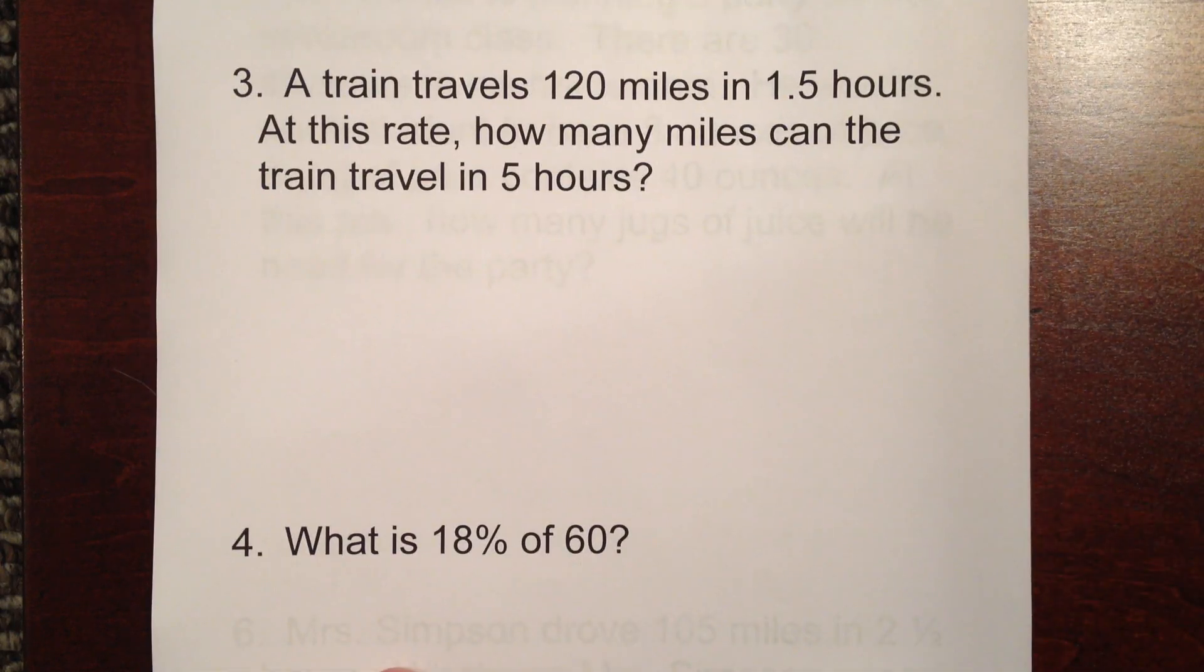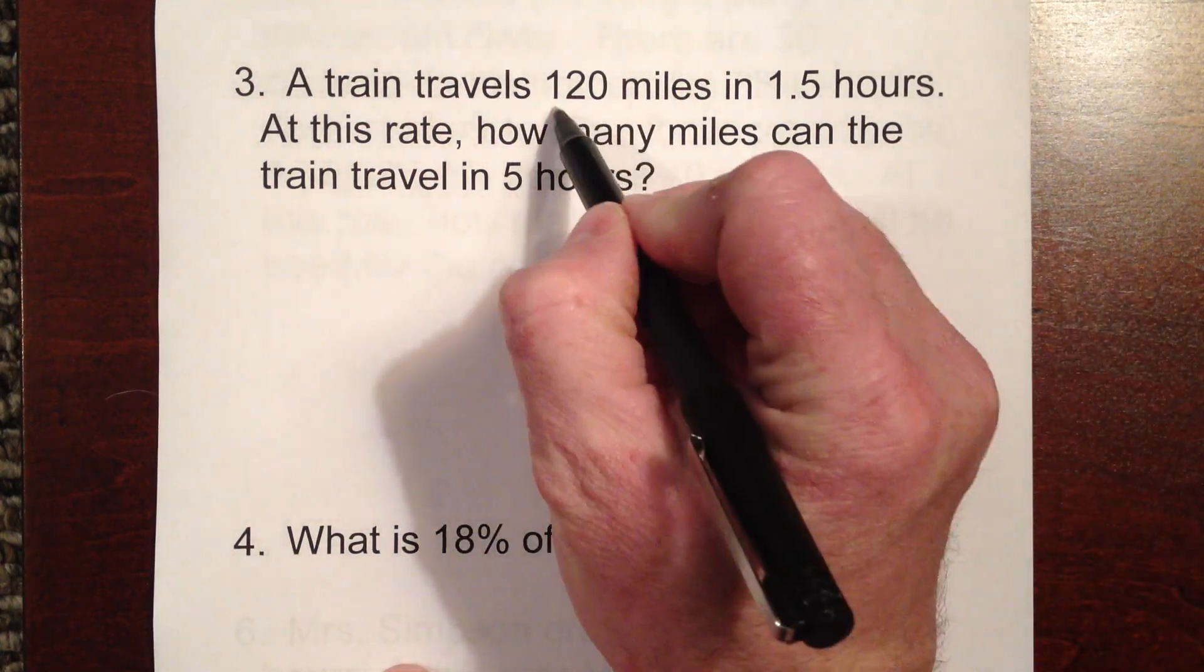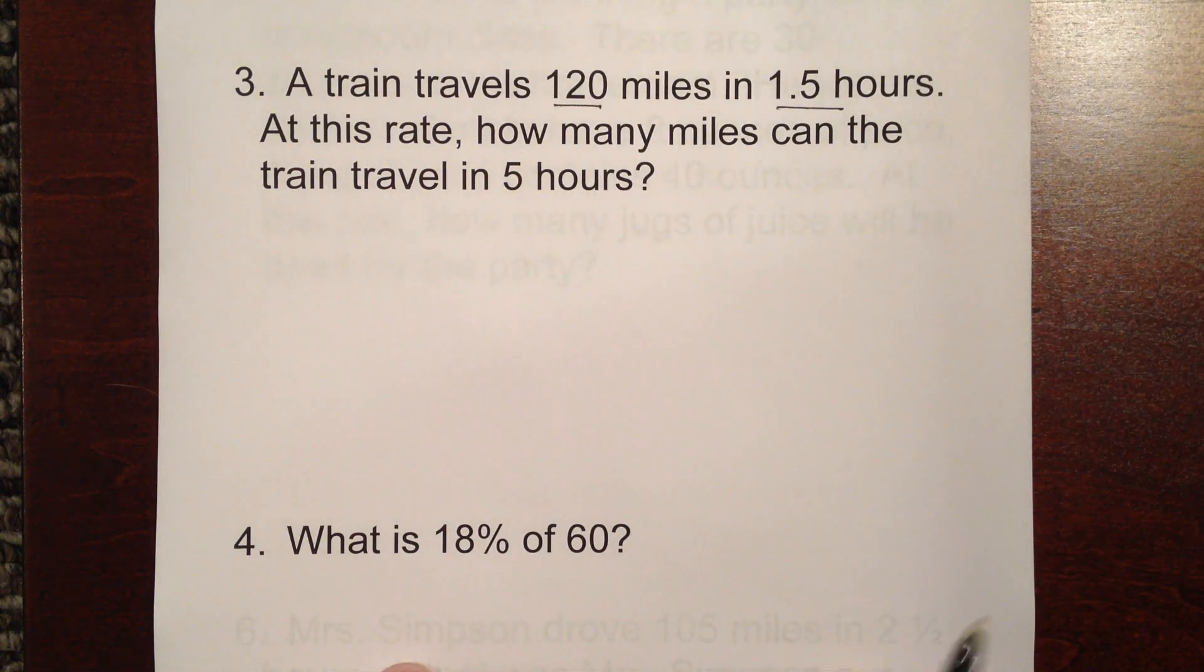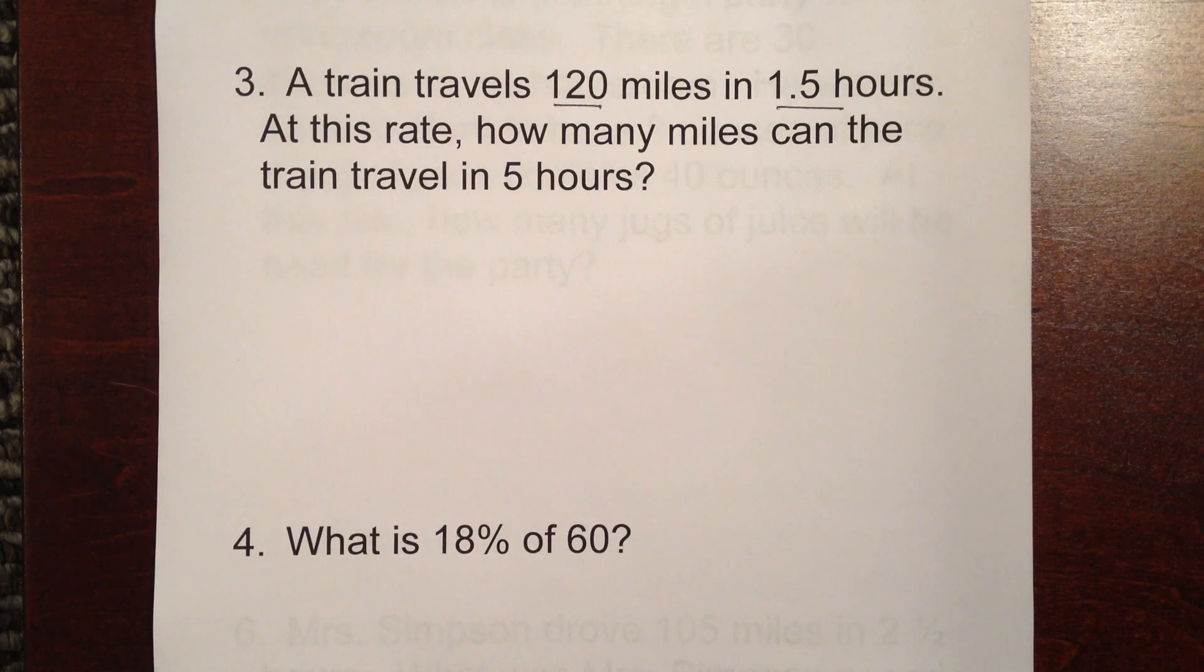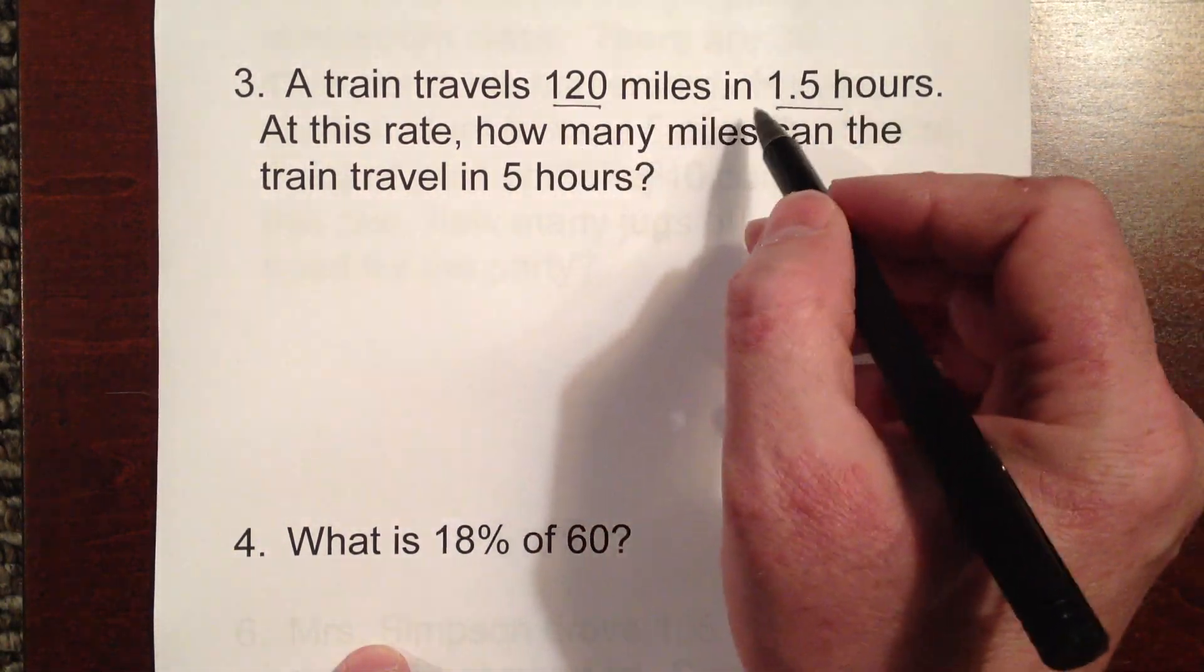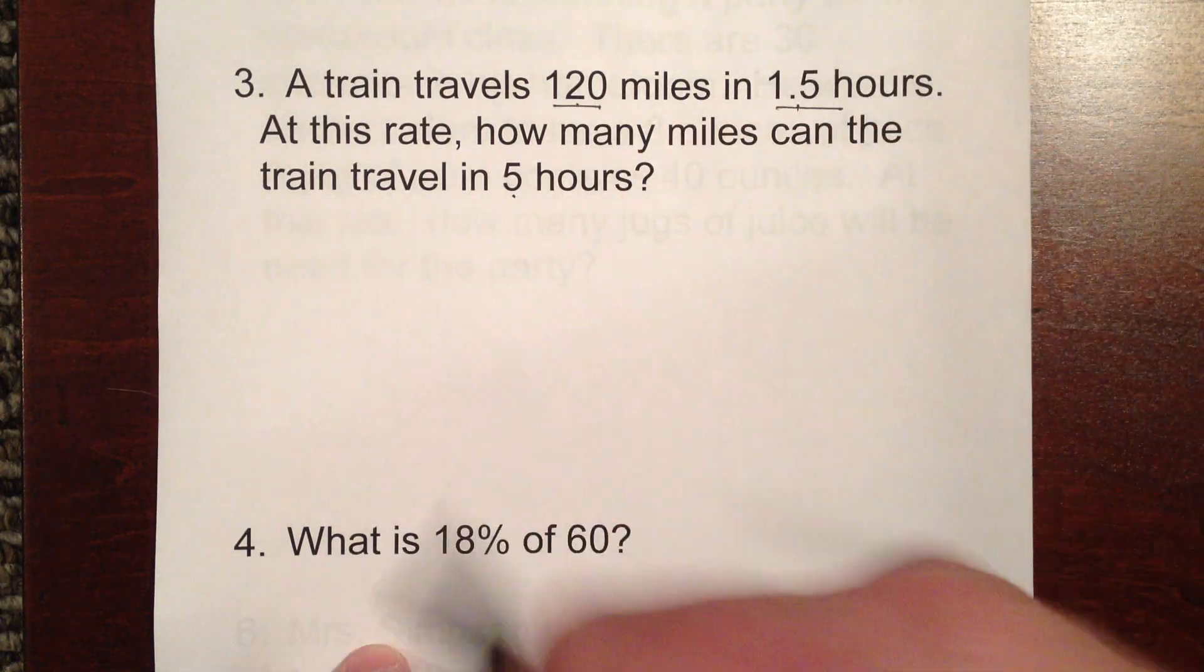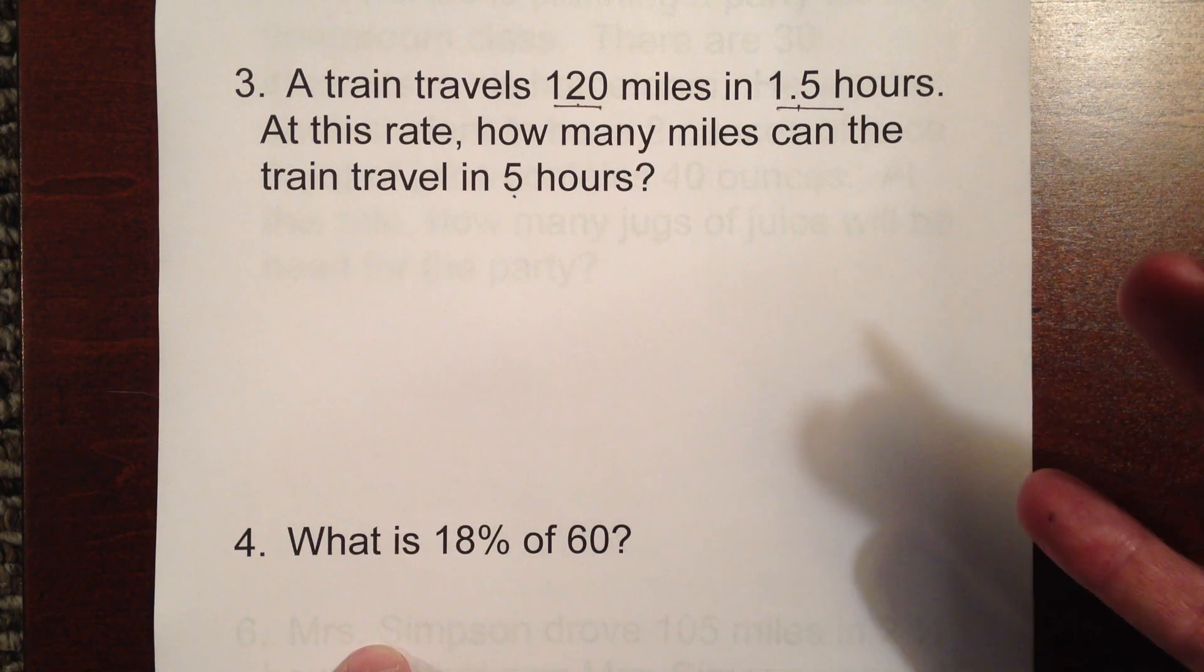Again, this is dealing with unit measurements here. A train travels 120 miles in one and a half hours. At this rate, how many miles can the train travel in five hours? We can do this one of two ways. We can say, well, I can figure out how many miles per hour I would travel by dividing 120 by 1.5 and then multiplying that by five. Or I could set up a proportion like we did last week. And that's the way I'm going to do it.